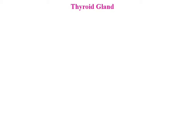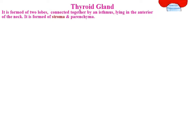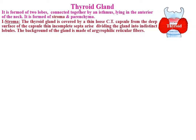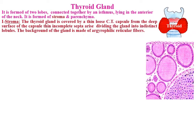The thyroid gland is formed of two lobes connected together by an isthmus lying in the anterior part of the neck. It is formed of stroma and parenchyma. The stroma: the thyroid gland is covered by a thin loose connective tissue capsule. From the deep surface of the capsule, thin incomplete septa arise, dividing the gland into indistinct lobules. The background of the gland is made of argyrophilic reticular fibers.